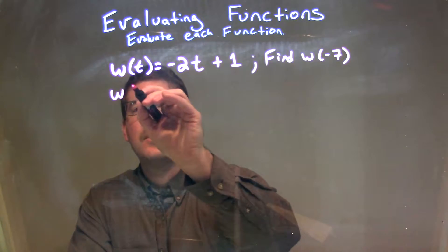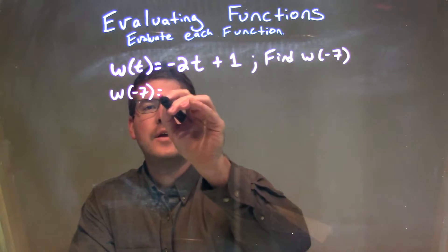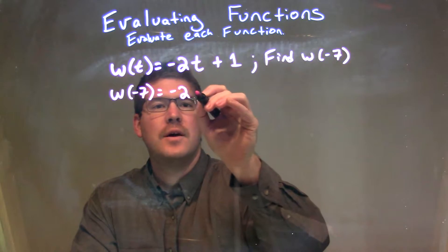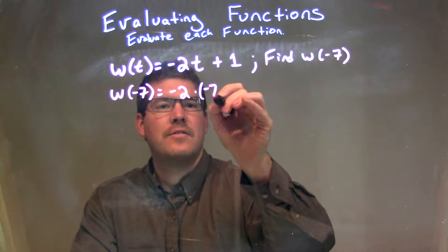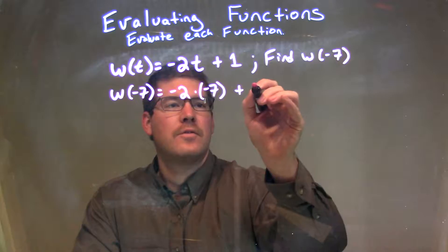w of negative 7, what we're trying to find here, is equal to negative 2 times a negative 7, and then plus 1.